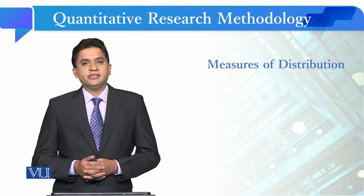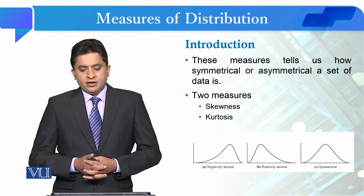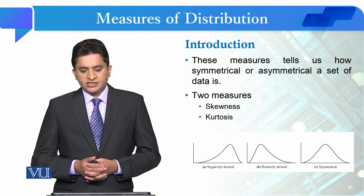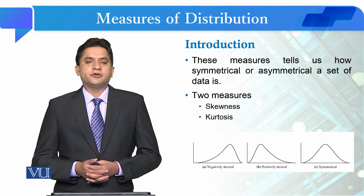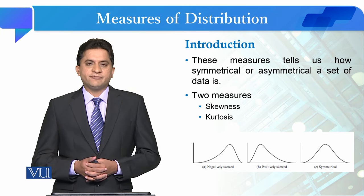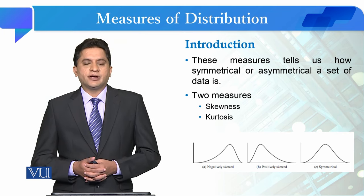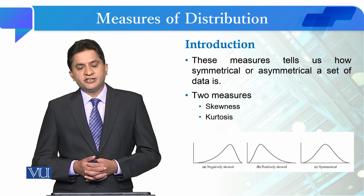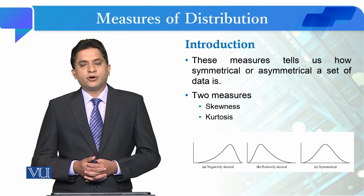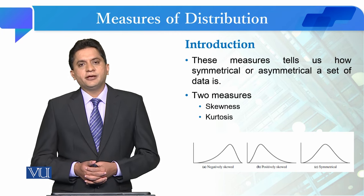Now we will see exactly what the distribution or the shape of these measures tells us. These measures actually tell us how symmetrical or asymmetrical a set of data is. Data is symmetrical when it is normally distributed. If the data is violated then we call it asymmetrical, which means that the curve is tilted, or the tallness is very high or very flattened.